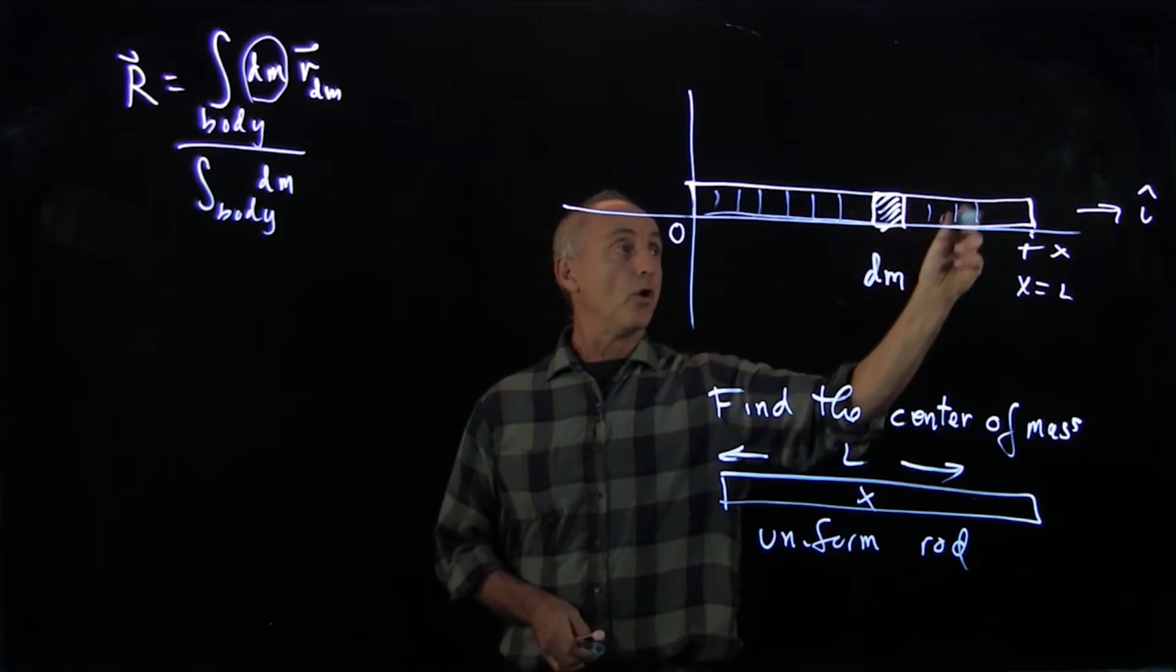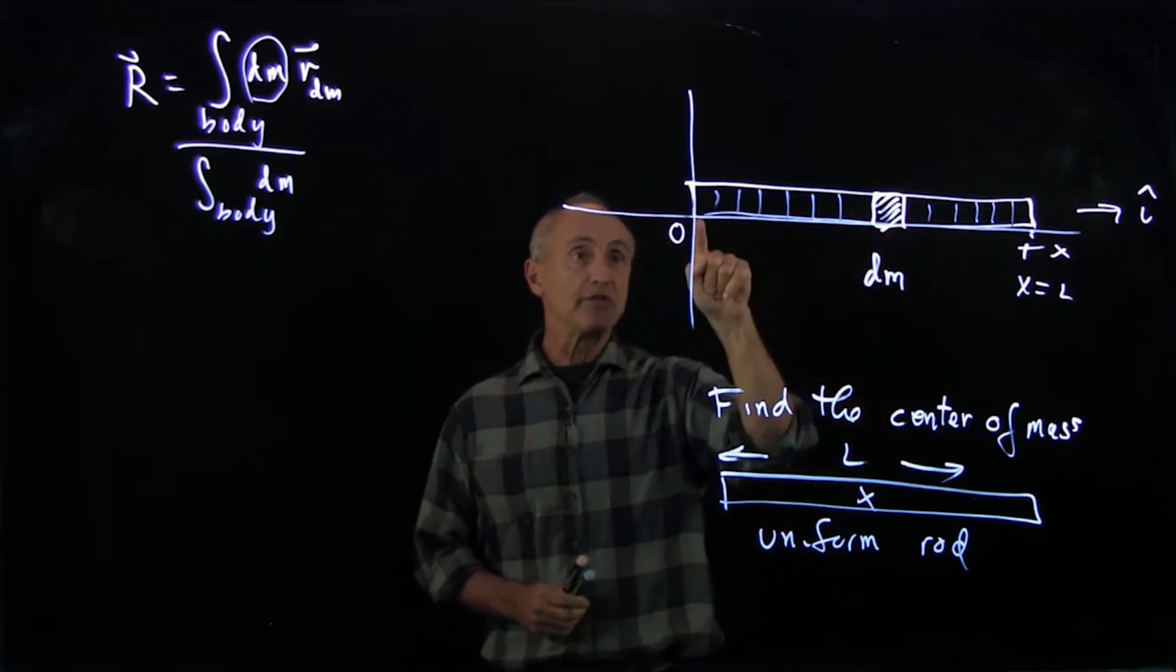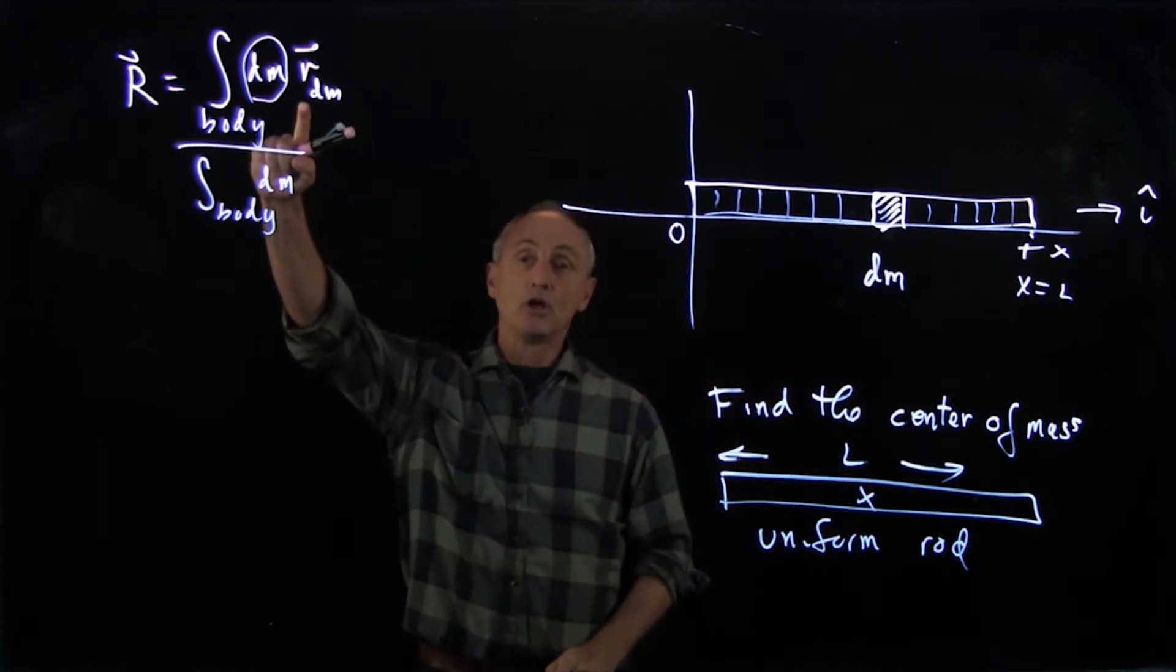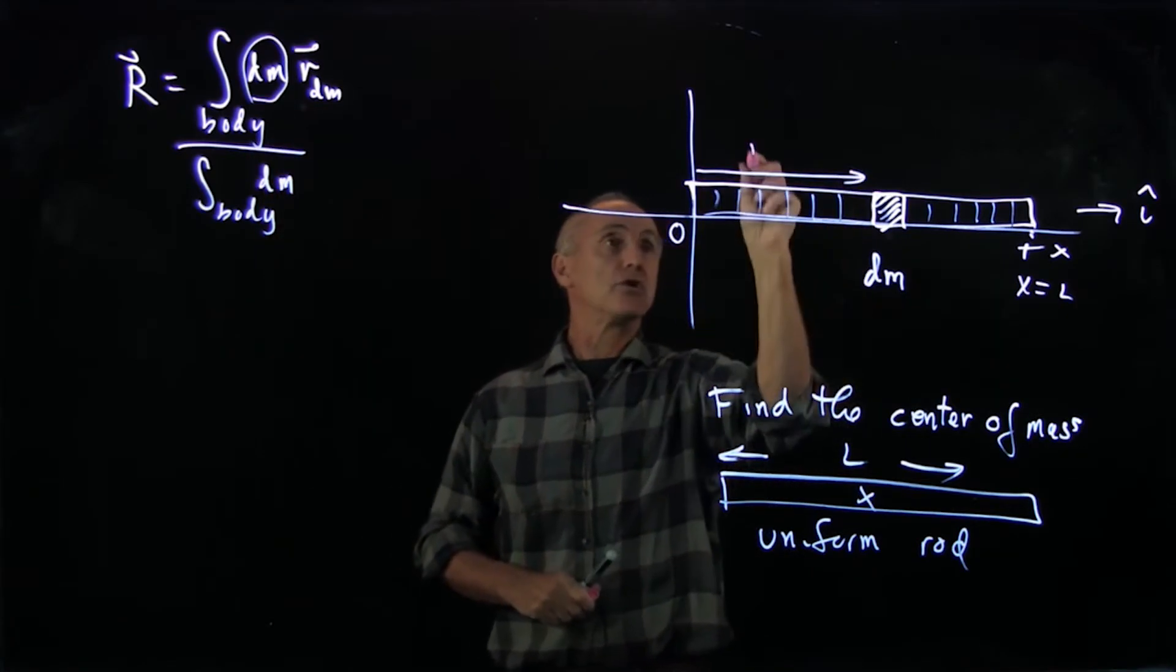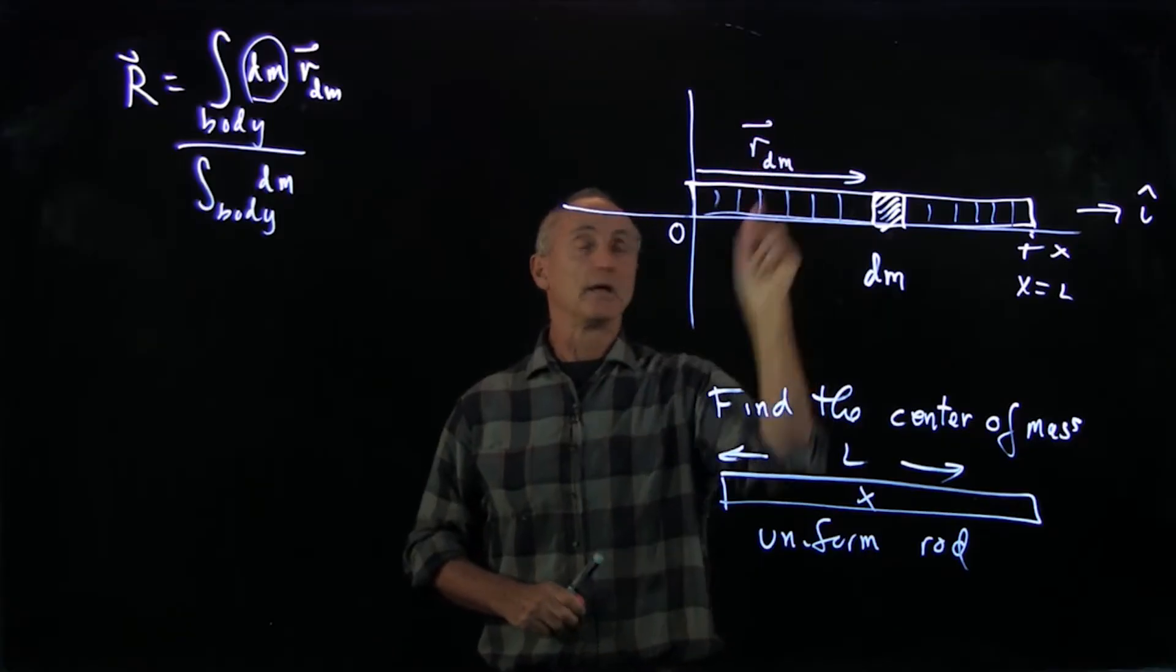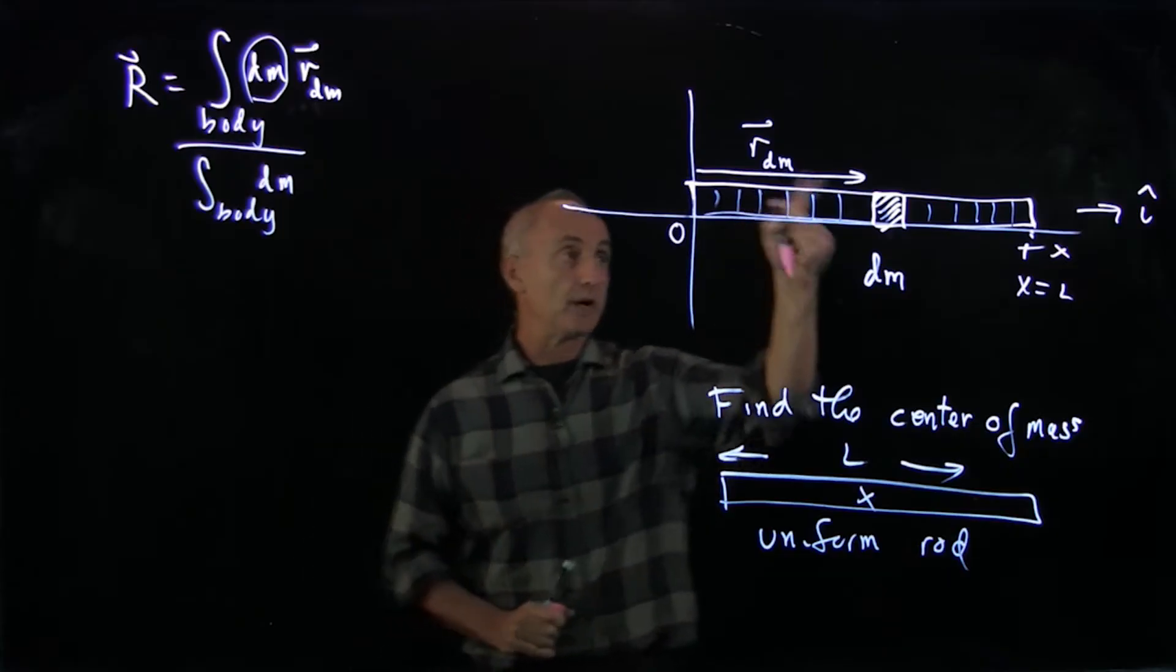I'm going to add up all these dm's. And the point is, is that the dm's are different distances from the origin. So the vector, and here's the next step, is I draw a picture of my vector r_dm. So now I have these terms at least explained in my diagram.